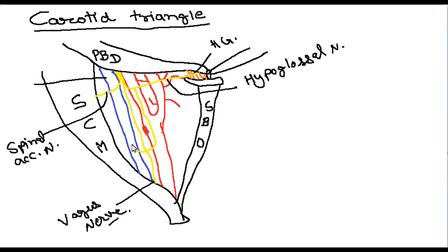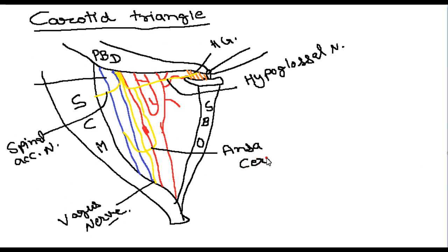One nerve descends from the hypoglossal nerve, descending along the internal carotid artery and common carotid artery and making a loop, then going along the internal jugular vein. This is known as the ansa cervicalis, and it lies anterior to the carotid sheath.